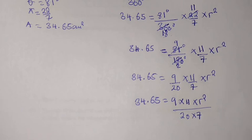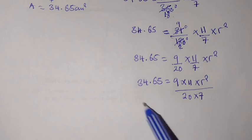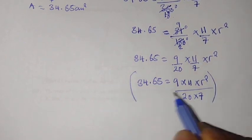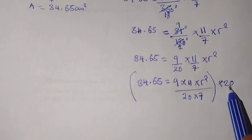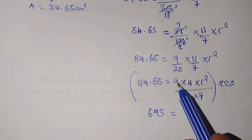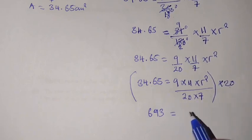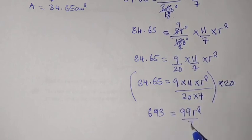Our main interest is to find the value of R. What we are going to do here is multiply the entire equation with 20. Once we multiply 34.65 times 20, this will give us 693, equal to 20 times 9 times 11 times R squared over 20 times 7. This 20 and 20 will cancel. You'll remain with 9 times 11, 99 R squared over 7.